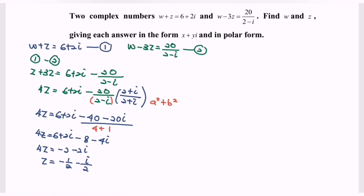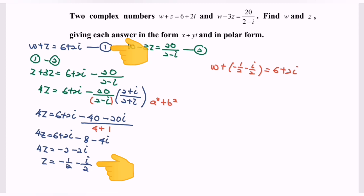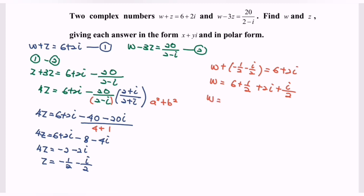Next, substitute z equals negative 1 over 2 minus i over 2 into the first equation. So w plus (negative 1 over 2 minus i over 2) equals 6 plus 2i. Rearranging, w equals 6 plus 1 over 2 plus 2i plus i over 2, which simplifies to w equals 13 over 2 plus 5i over 2.